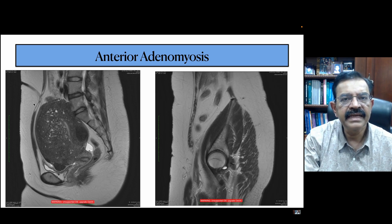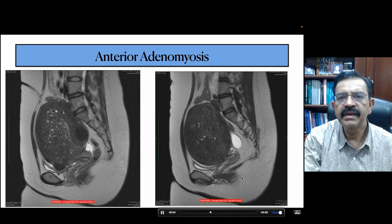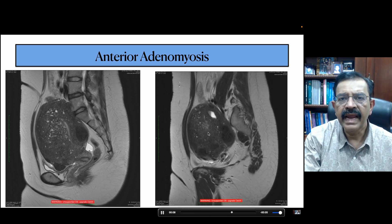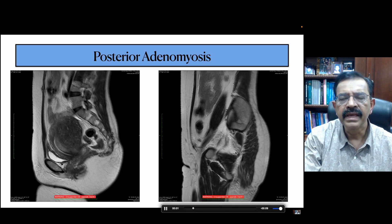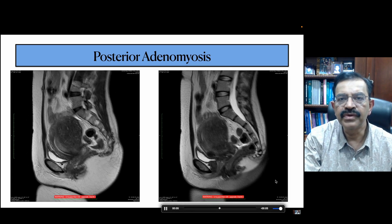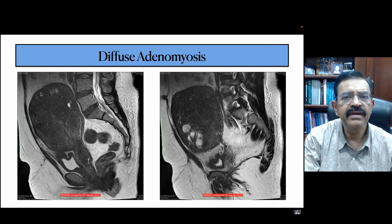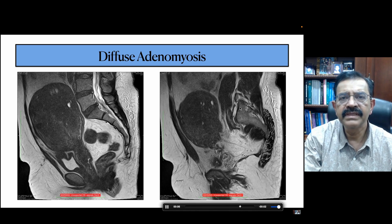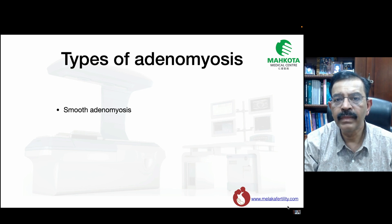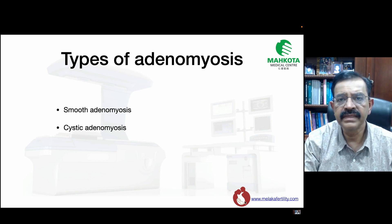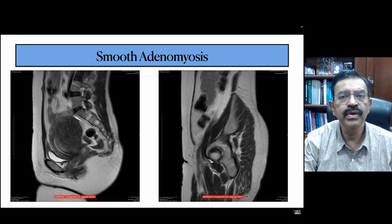For example, this is an anterior adenomyosis where it is found in the anterior wall of the uterus — you can see it on this MRI. The second is a posterior adenomyosis, the most common type, where adenomyosis is in the posterior wall. The third is diffuse adenomyosis found all over — anterior, fundus, and posterior. In terms of appearance types: smooth adenomyosis, cystic adenomyosis, adenomyosis with lakes, and pedunculated adenomyosis.